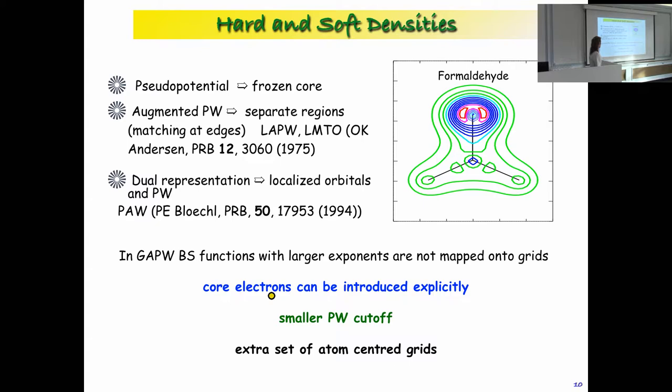In this way we can explicitly treat core electrons — they are not frozen. We can also use smaller cutoffs with GAPW and pseudopotentials, because only the smooth part of the density goes on the regular grids. The additional cost is that we must introduce atom-centered grids to compute the hard part of the density on grids specific to each atom — sufficiently dense and atom-centered.